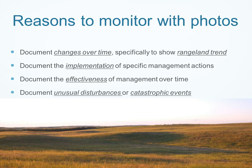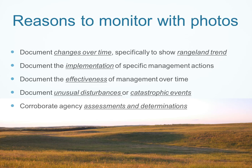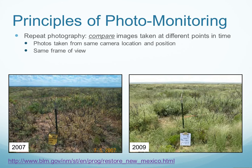Photos may be used to document unusual disturbances or catastrophic events such as floods, fires, or drought, and they're very useful for corroborating agency assessments and determinations about a specific piece of land. A core principle guiding photo monitoring is the concept of repeat photography — repeating photographs taken from the same camera location, the same point of view, and the same frame of view so that these images can be compared to show changes.